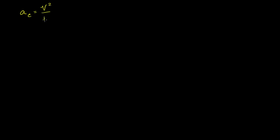What I want to do in this video is a calculus proof of the famous centripetal acceleration formula. The magnitude of centripetal acceleration — the actual direction will always be pointing inwards — but the magnitude is equal to the magnitude of the velocity squared divided by the radius. This is a scalar formula, talking about the magnitude of the acceleration and the magnitude of the velocity. These are all scalar quantities.